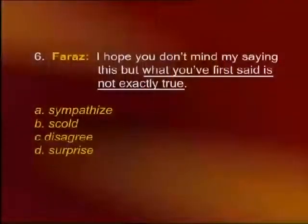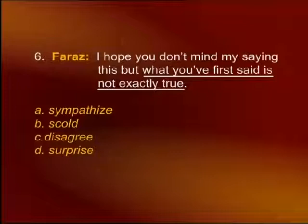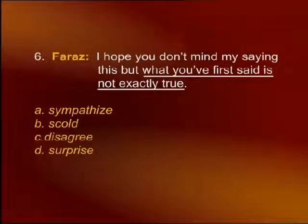Number six: 'I hope you don't mind my saying this, but what you've just said is not exactly true.' The underlined words — are they showing sympathy, scolding, disagreement, or surprise? The words show disagreement — 'It's not exactly true.'